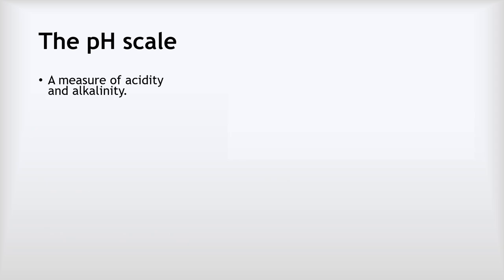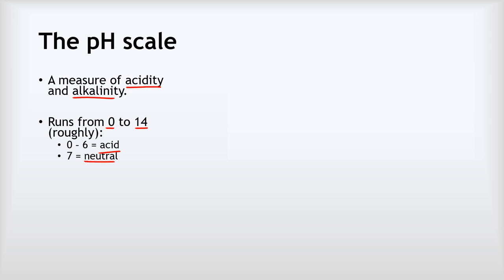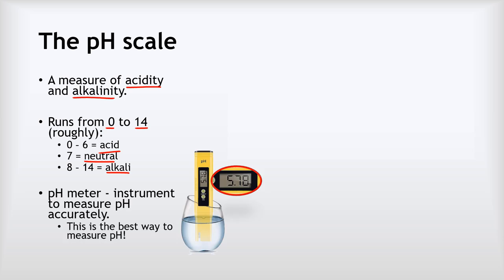The pH scale is a measure of the acidity or alkalinity of a solution, and it runs from roughly 0 to 14. pH 0 to 6 means the solution is acidic, pH 7 is neutral, and pH 8 to 14 is alkaline. The only accurate way to measure pH is with a pH meter — you dip it into the solution and it gives an accurate digital reading. For example, the pH of this solution here is 5.78.